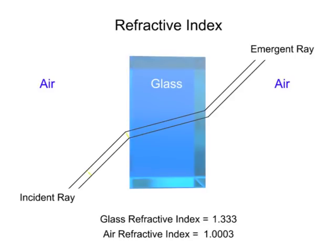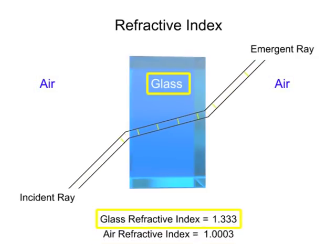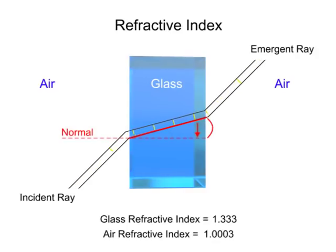Anytime a light beam travels from a medium with a low index of refraction, like air, to a medium with a higher index of refraction, like glass, the beam of light will bend toward the normal. Likewise, when the beam of light exits a highly refractive medium into a medium with a low index of refraction, the process is reversed. The bottom portion of the beam of light exits first and resumes at the speed of light, with the top portion still at the speed determined by the medium. This causes the beam to pivot away from the normal line.